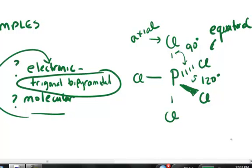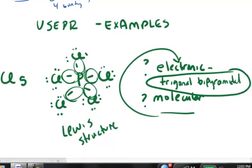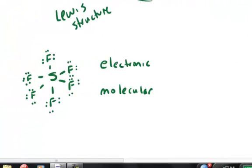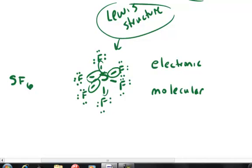Let's look at another example. The next example is sulfur hexafluoride. Here, I have drawn the Lewis structure for sulfur hexafluoride to get us started. In this case, we have one, two, three, four, five, six regions of high electron density. In that case, we would predict the electronic geometry to be octahedral.